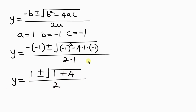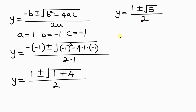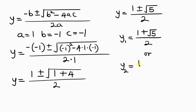Simplifying further, we have y equals 1 plus or minus the square root of 1 plus 4, which is 5, all over 2. So we have two values of y: the first value is 1 plus the square root of 5 over 2, and the second value is 1 minus the square root of 5 over 2.